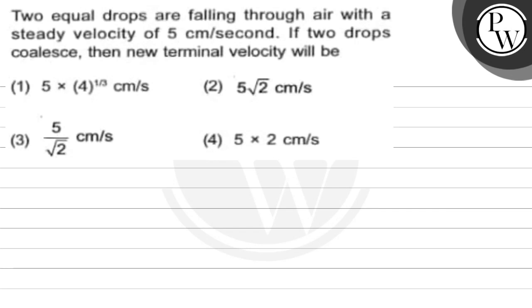Hello, let's read this question. Two equal drops are falling through air with a steady velocity of 5 cm per second. If two drops coalesce, then new terminal velocity will be.